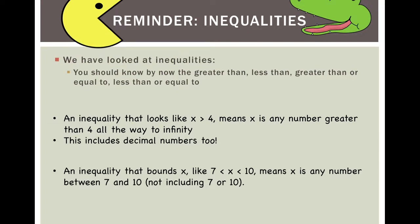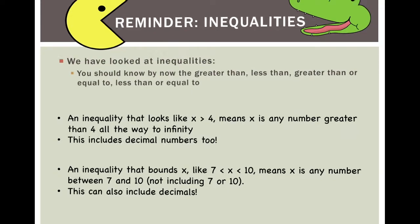An inequality that bounds X — for example, 7 less than X less than 10 — means X is any number between 7 and 10, not including 7 or 10, because it's just less than. This can also include decimals.